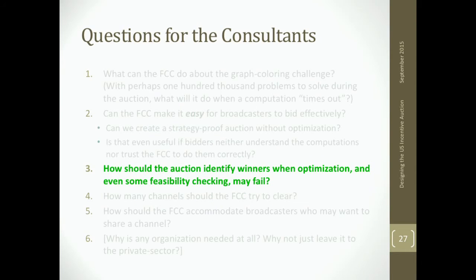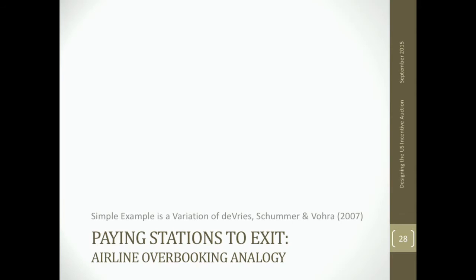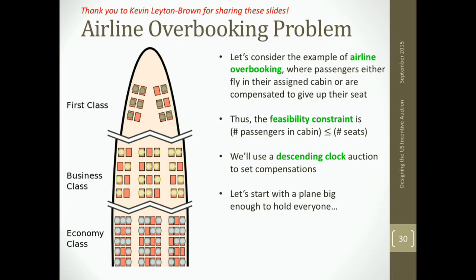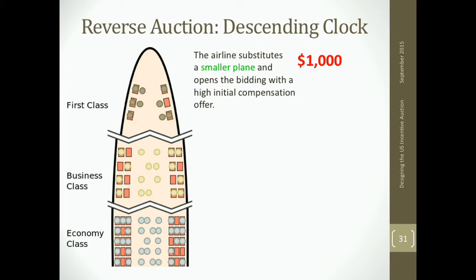How should we identify winners when optimization and feasibility checking may fail? The trick is the clock auction. A variation of an algorithm by DeVries, Schumer, and Vora (2007): the airline overbooking analogy, presented using Kevin's slides. We already have stations on the air — like passengers already on a plane. We decide to use fewer channels — like switching to a smaller airplane. Suddenly some seats disappear, and some passengers don't have seats anymore. The airline opens bidding with an offer of compensation of $1,000 to get volunteers to give up their seats.